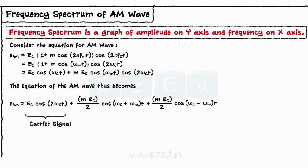The first term is a carrier signal. The second term is the upper sideband and the third term is the lower sideband.